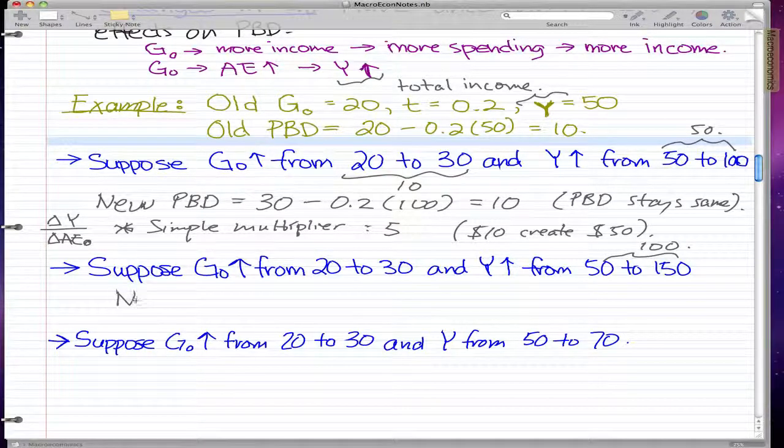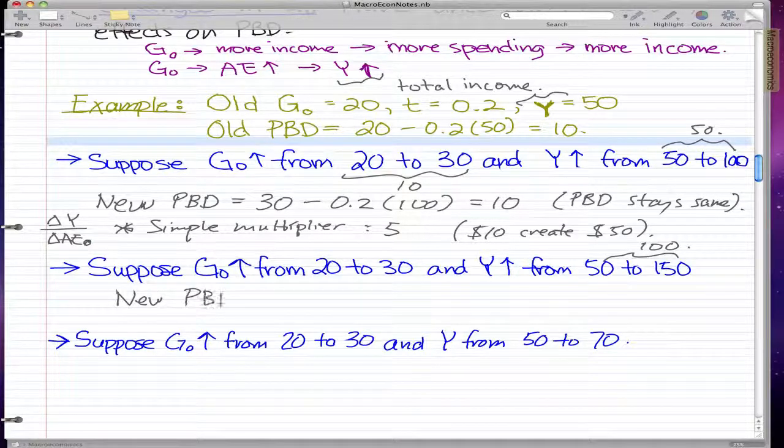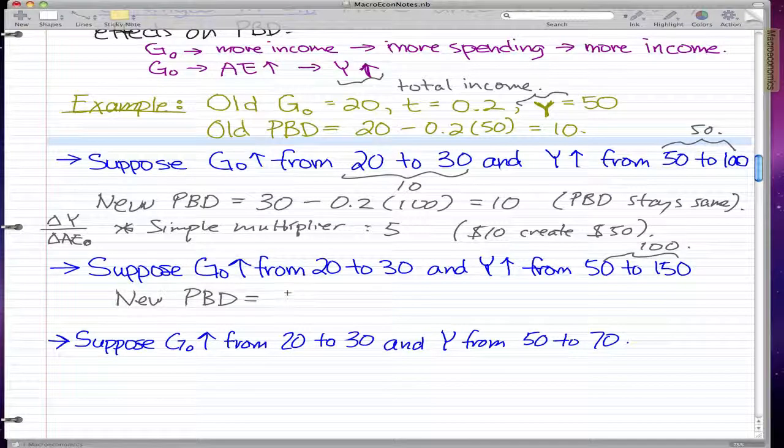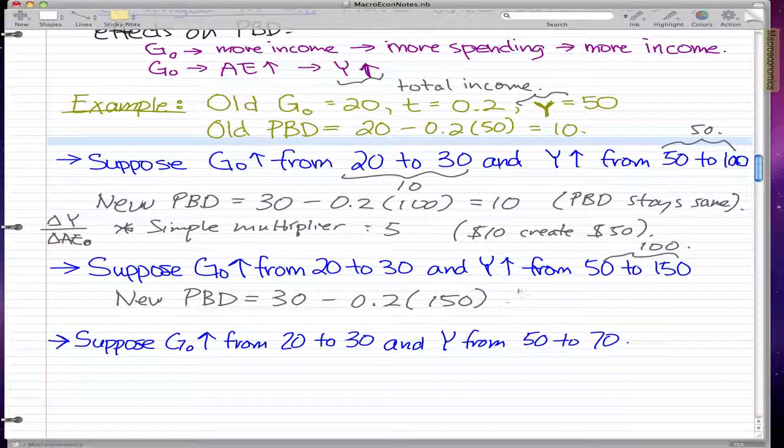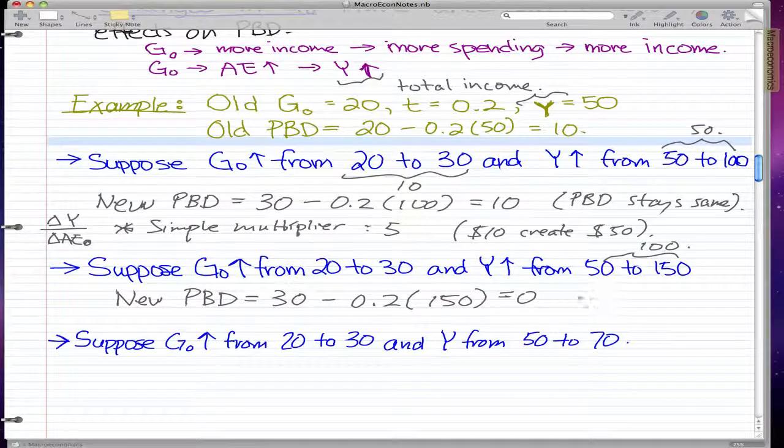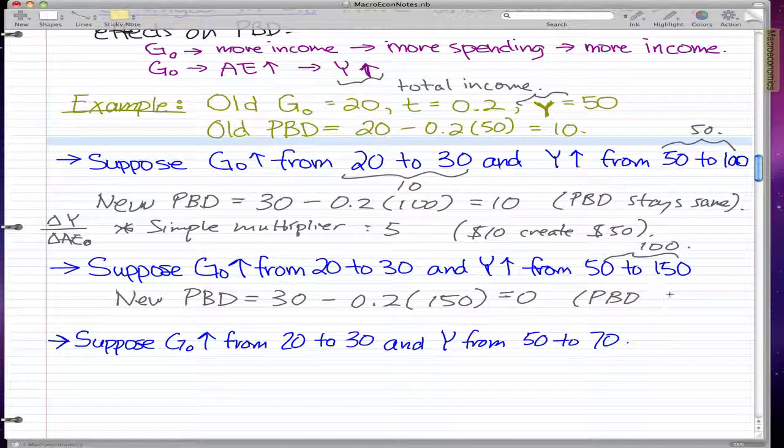The new primary budget deficit is, substituting numbers in, 30 minus 0.2 times 150 equal to 0. So in this case, our primary budget deficit actually fell.